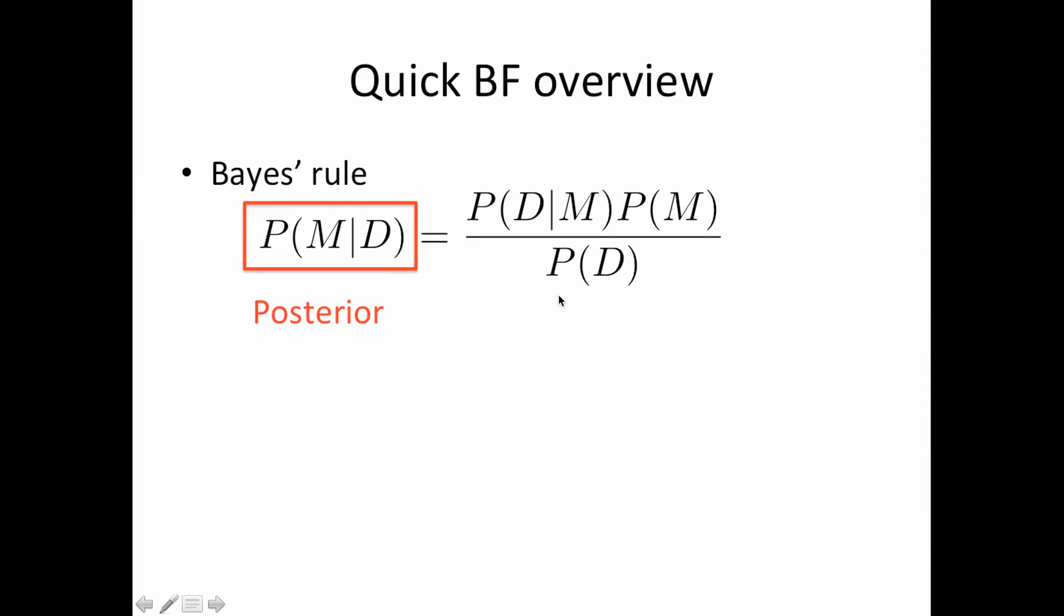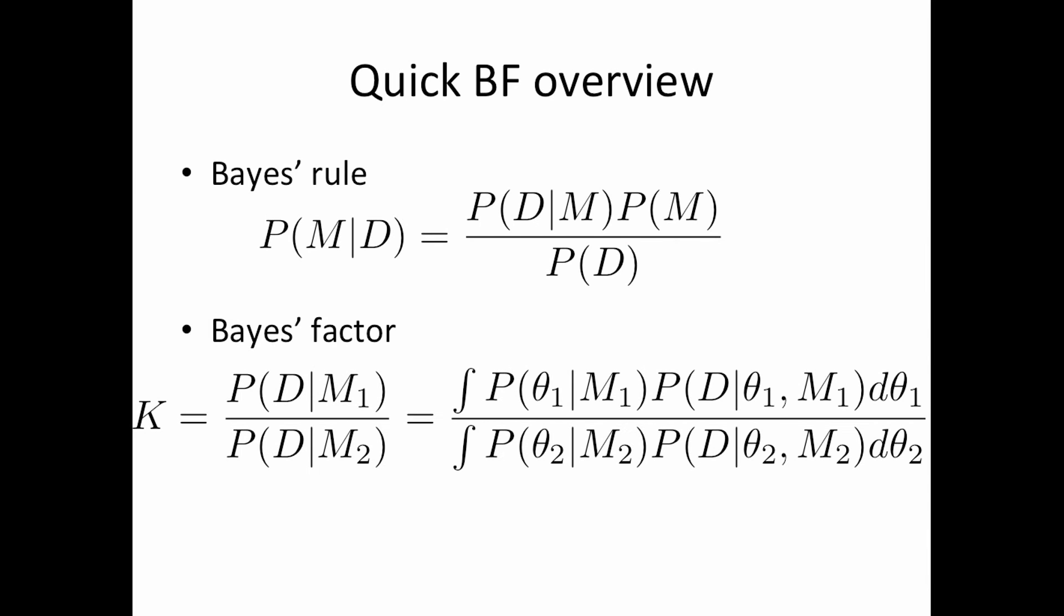He also said something else. He said frequentists and Bayesian approaches go beyond the data. Frequentists supply additional information about the sample space from which our data were drawn. And Bayesian approaches incorporate prior information. I think he's saying that his approach, the likelihood paradigm, focuses more on just what the data have to say. But anyway, all Bloom's words, not mine. I'm just telling you what he said. And again, that link will be below. So just a quick Bayes factor overview. Here's good old Bayes rule. Hopefully you're familiar with this. So D stands for data, M is model.